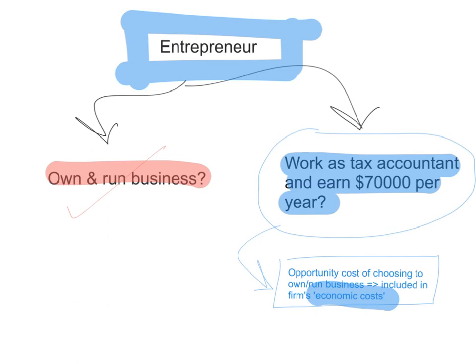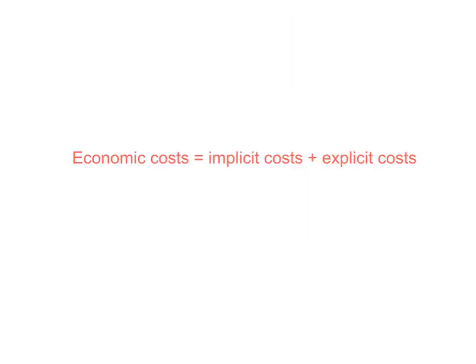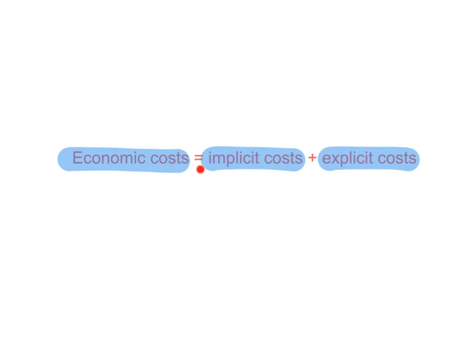It is very important to understand that economic costs are more than just the accounting costs. Accounting costs, or explicit costs, are costs where you pay money directly. But implicit costs don't involve paying money — they involve giving up money you could have earned. To sum up: economic costs equal implicit costs plus explicit costs. Explicit costs are the accounting costs involving direct payment. Implicit costs are the earnings you sacrifice by choosing to use your own resources instead of hiring them out or selling them to another firm.